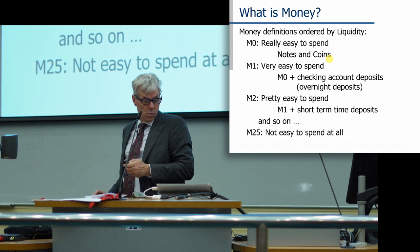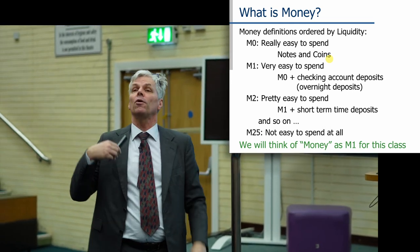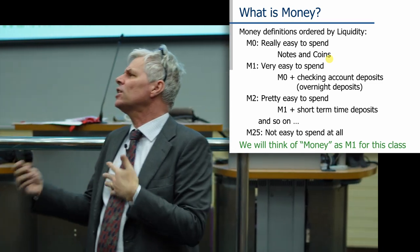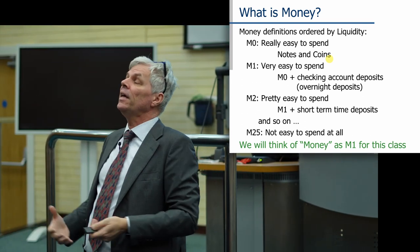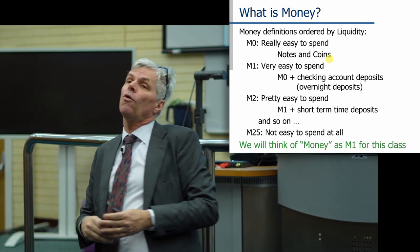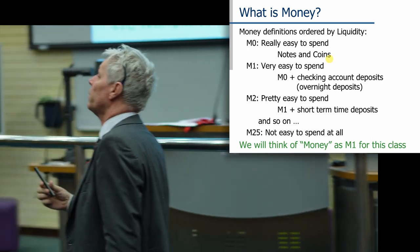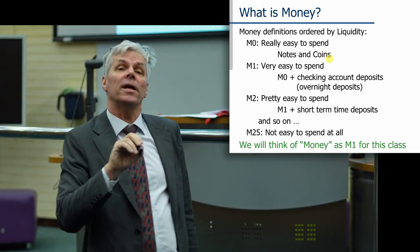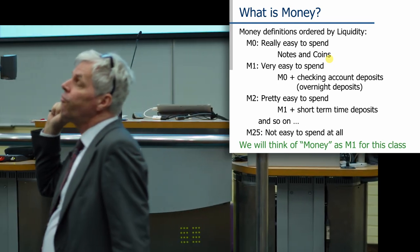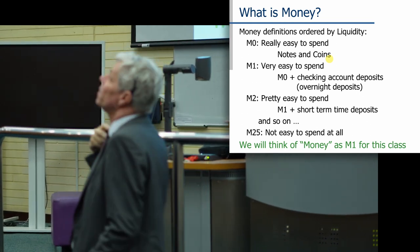We said money is going to be anything that does the things money does. In particular, we're going to focus on the medium of exchange — anything that serves as a medium of exchange in our economy we'll call money. A medium of exchange really has to do with liquidity: how easy it is to spend, and how easy it is to pass on to get the stuff you actually want. For this class and macroeconomics in general, when you say the word money, we want you thinking in terms of M1.